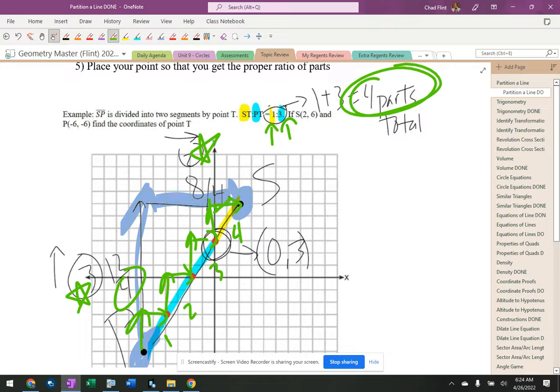So the last thing is I got to look at this and it says ST is one part. Well, point S is right here, so I want one part, which is why point T goes right there.